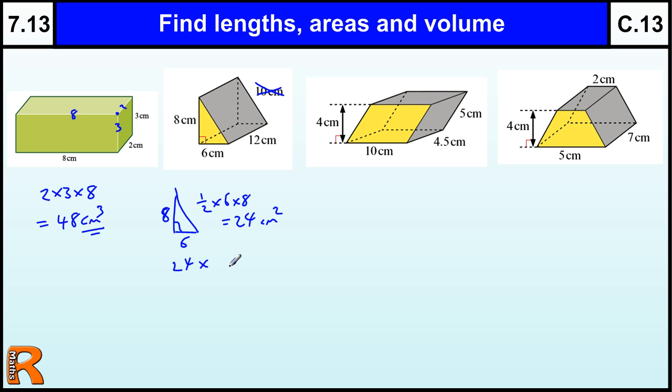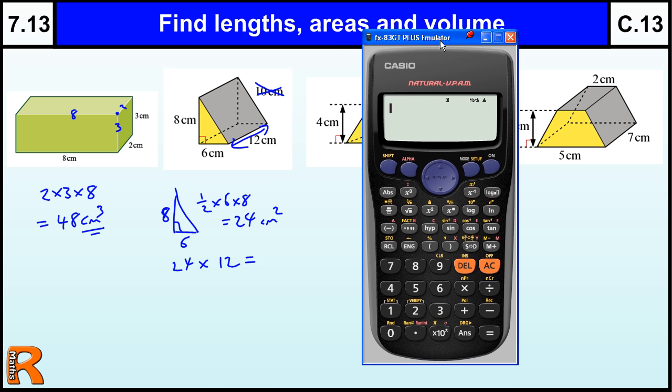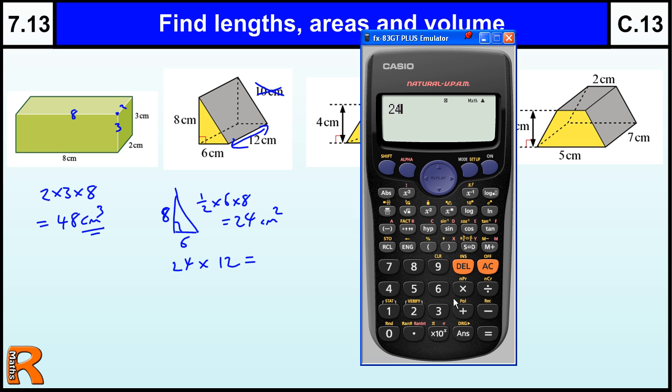So we've got the 24 as the area of the front. To get the volume we need to times that by the 12, the depth of the shape. So if we stood it up on this end it would be 12 high. So we've got 24 times by 12, let's bring the calculator in for that. So that's 288 centimeters cubed for the volume.